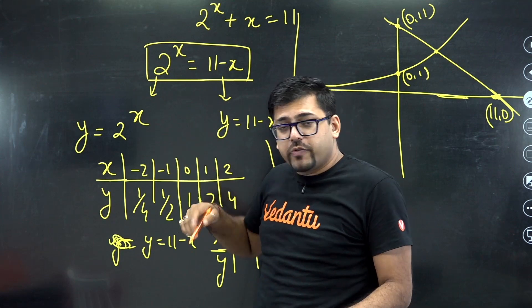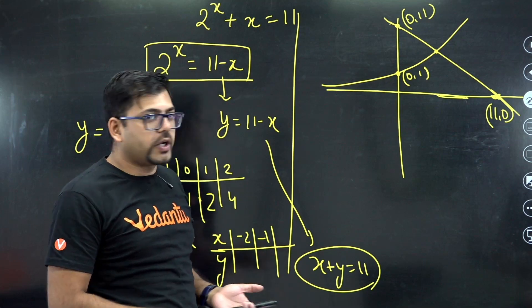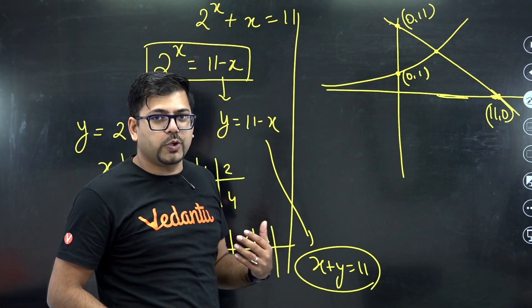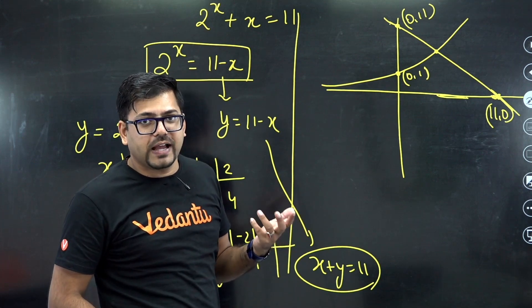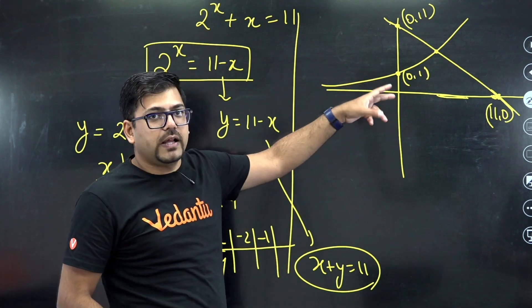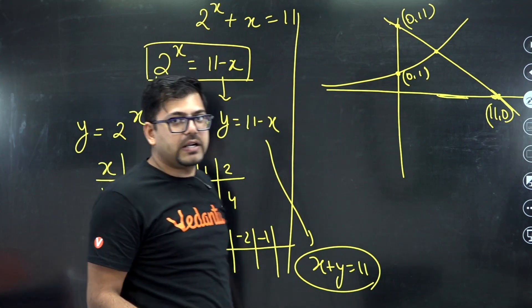So now here from the graph, you won't be able to find the exact value. Either you can utilize some software, some mathematical tools available on the website or internet to find this value, or otherwise there is only one method: hit and trial. So you have to take multiple values.